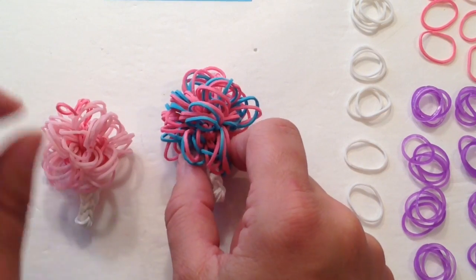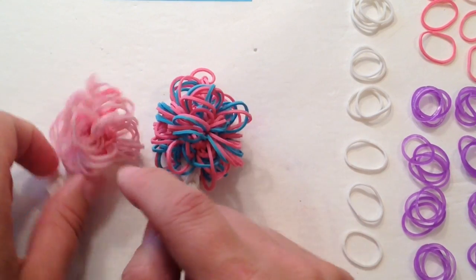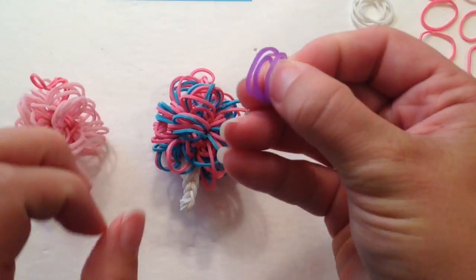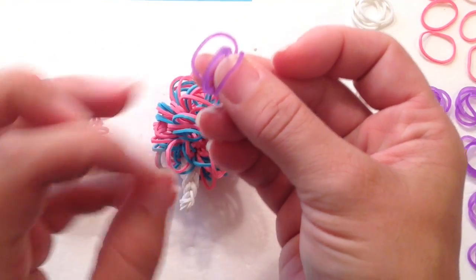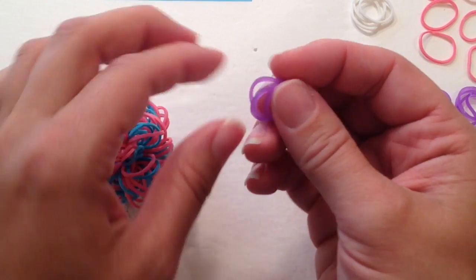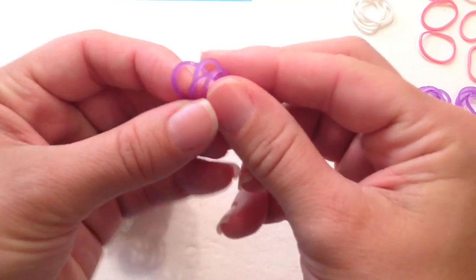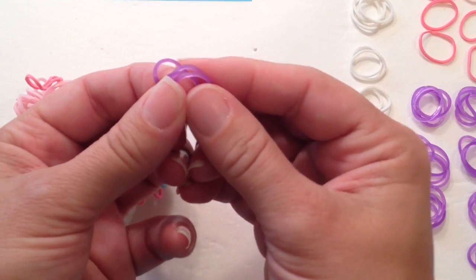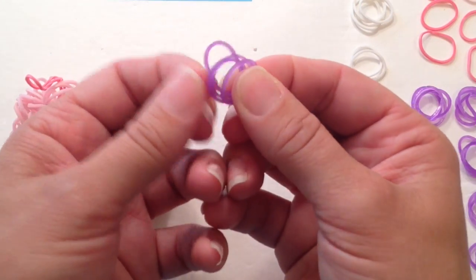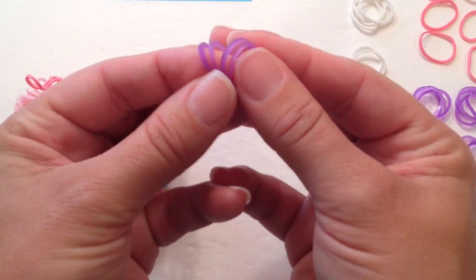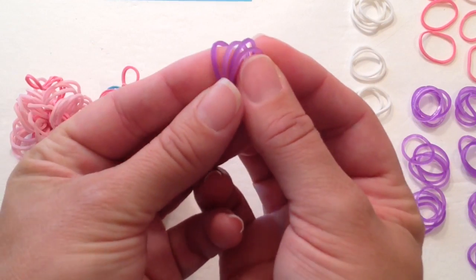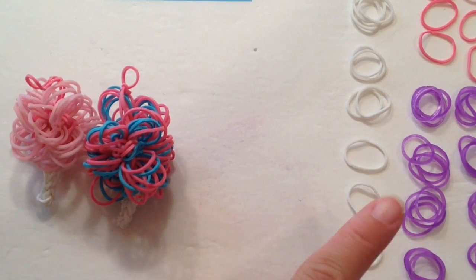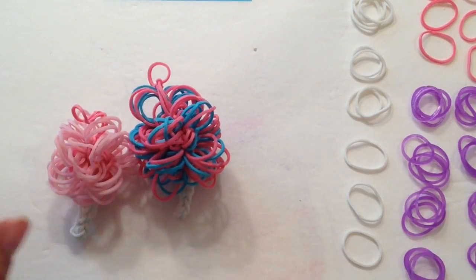Before we begin this project, I'd like for you guys to take your fluffy color, whatever color you're using for the fluff. Today I'm using purple, so my Cotton Candy is going to be grape flavor today. I want you guys to make 14 piles of 4 rubber bands. So just gather up 4 rubber bands and set them beside your work area in little piles.